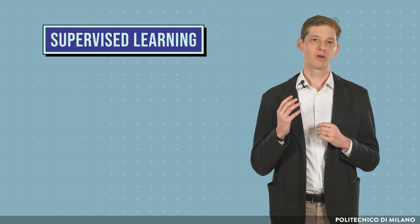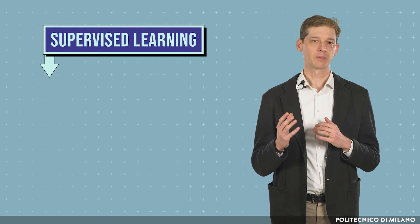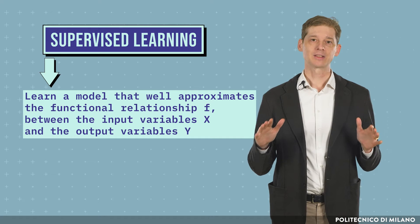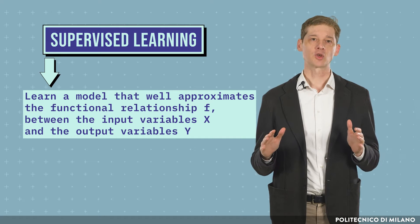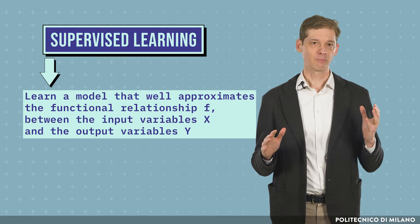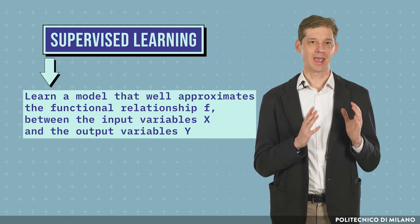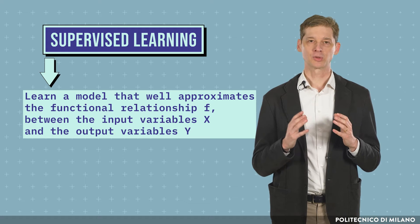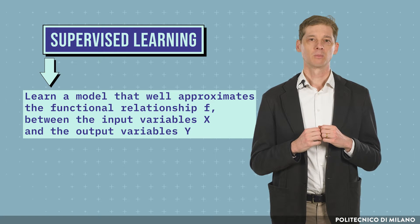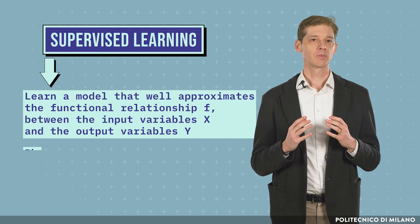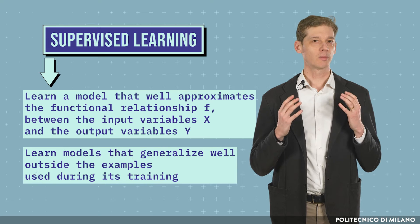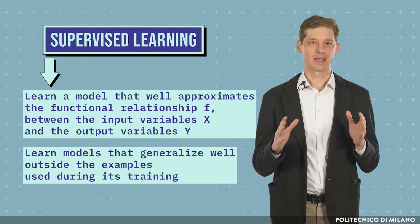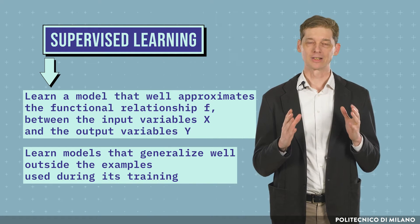The goal of a supervised learning algorithm is to learn a model that well approximates the functional relationship f between the input variables x and the output variables y. Most importantly, we want to learn models that generalize well outside the examples used during training.